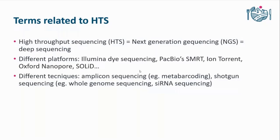Different platforms include Illumina dye sequencing, PacBio single molecule real-time sequencing, Ion Torrent, Oxford Nanopore, and Solid. At least in my laboratory, people sometimes just talk about Illumina sequencing when they actually mean the whole HDS. Then there are different techniques: amplicon sequencing, also called metabarcoding, and shotgun sequencing, for example whole genome sequencing or small RNA sequencing. Many people in my institute use 'whole genome sequencing' when they actually mean HDS as a whole.